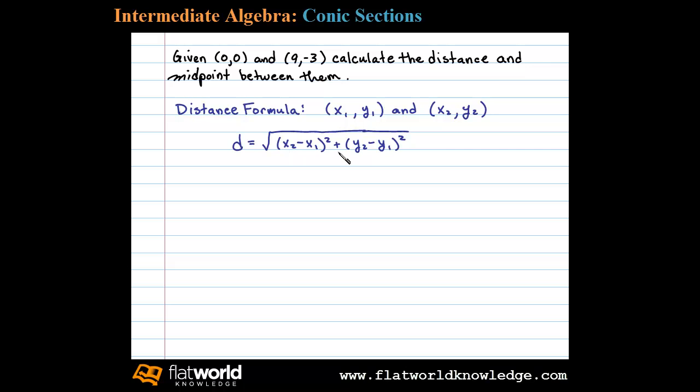Then take the square root of that result. In this case, we substitute into the formula. Here we have x₂ is 9 and x₁ is 0, so 9 minus 0 squared.